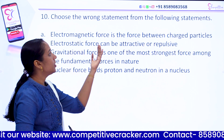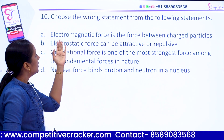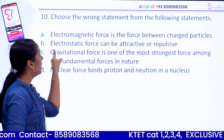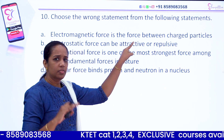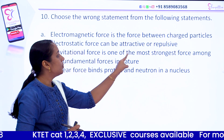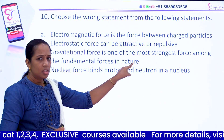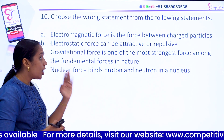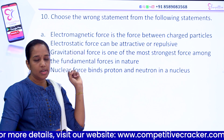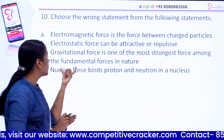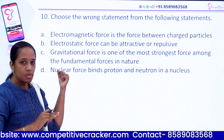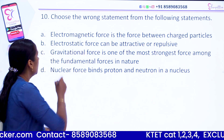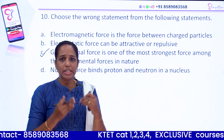Question number 10. Choose the wrong statement. Electromagnetic force is the force between charged particles — that's correct. Electrostatic force can be attractive or repulsive — that's correct. Gravitational force is the strongest force among fundamental forces — that is the wrong statement. Gravitational force is actually the weakest. The strongest fundamental force is the strong nuclear force. Nuclear force binds protons and neutrons in the nucleus. Option C is the answer.